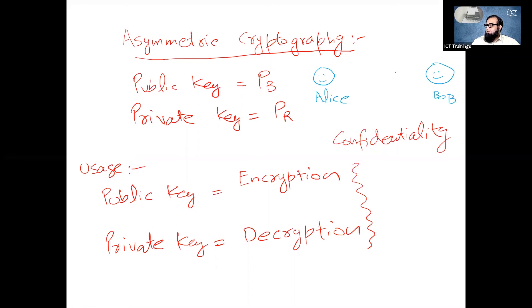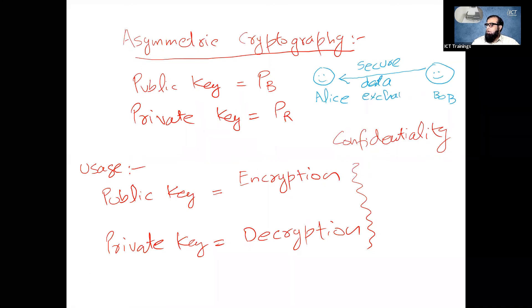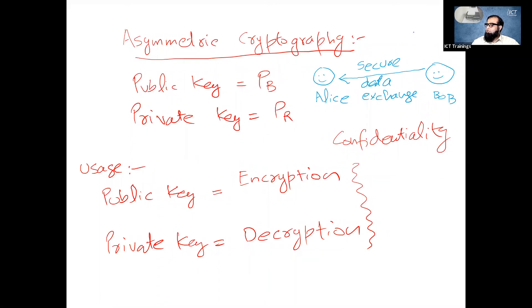Agar hum usi discussion ko lekar chalen. So we have Alice and Bob. Agar isne koi data Alice ko send karna hai securely, secure data exchange. Agar Bob ne Alice ko securely data send karna hai to Bob ke paas kya hona chahiye public key of Alice.